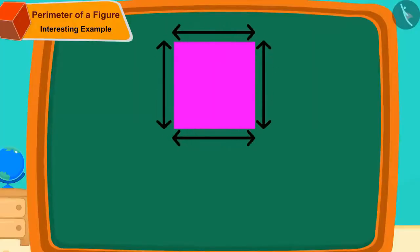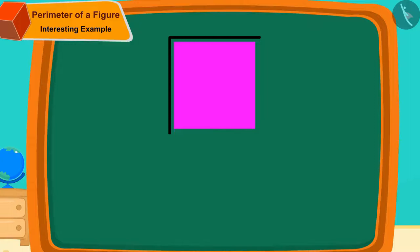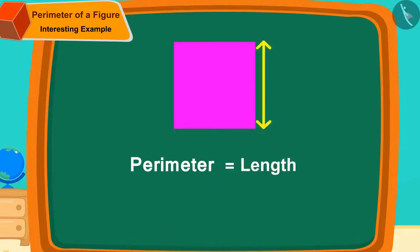All sides of the square are of the same length. So, to find the perimeter of a square shape, we can simply multiply the length of any one of its edges by 4.